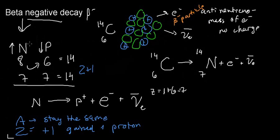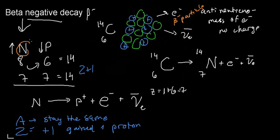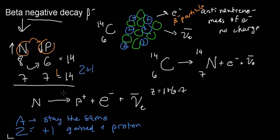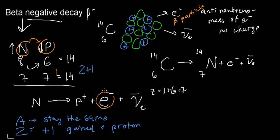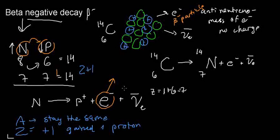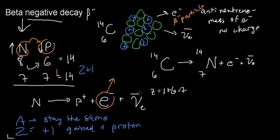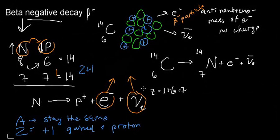Intuitively, beta negative decay means: I have too many neutrons, so one neutron turns into a proton and I eject a negative charge to conserve charge. The electron is ejected because it doesn't belong in the nucleus, and an anti-neutrino is also generated and shoots out.